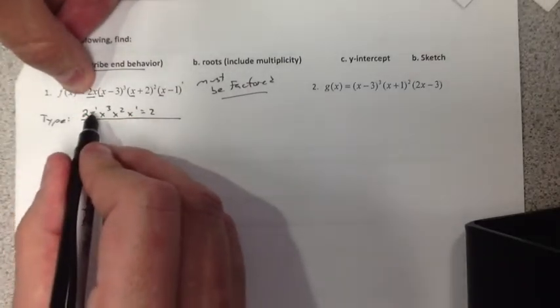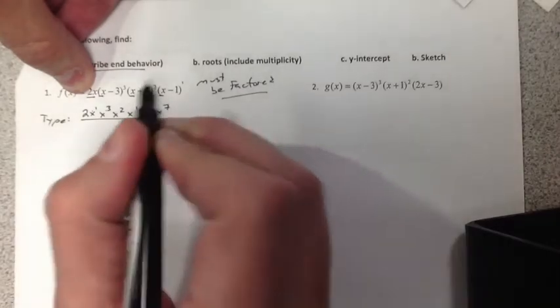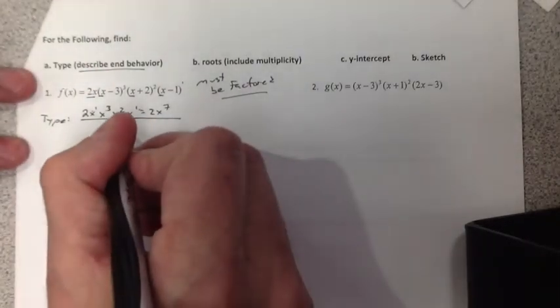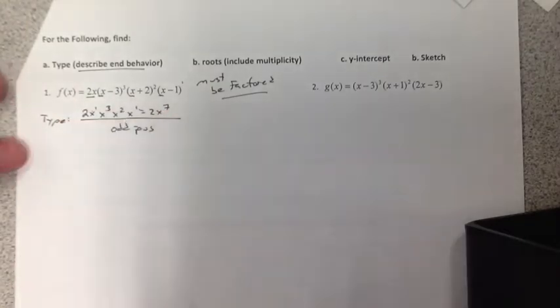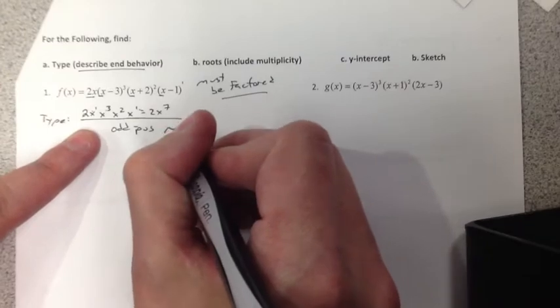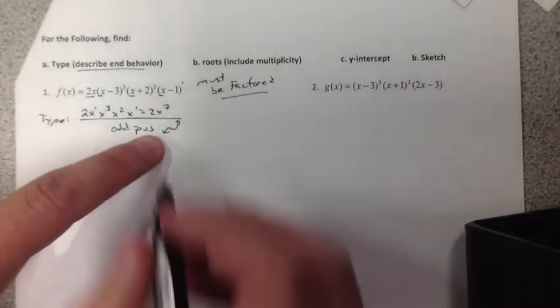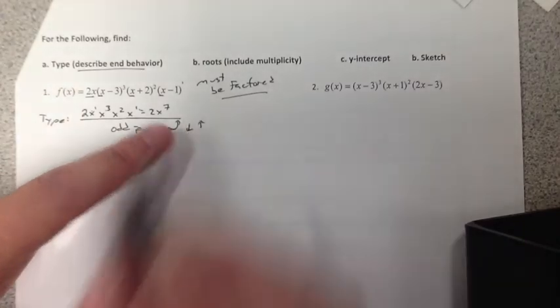First, simplifying it, we get 2x to the 1, 2, 3, 4, 5, 6, 7. That tells me it is odd, but the 2 is positive. So it's odd positive. So what does that tell me? On the left side, it has to go down. On the right side, it goes up. It's going to make it look like our cubic. Starts down, ends up. Starts down, ends up.